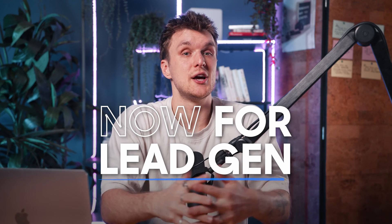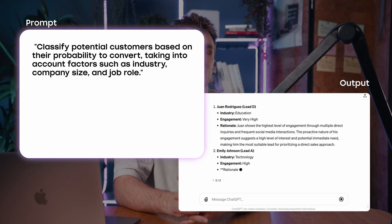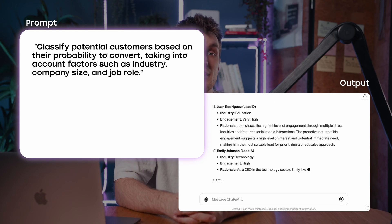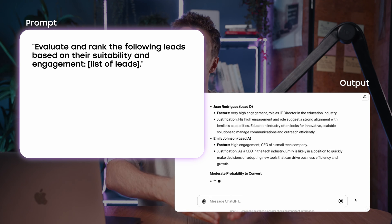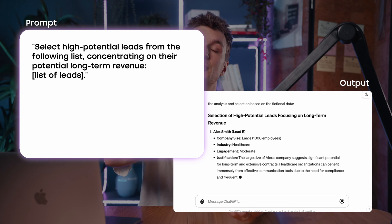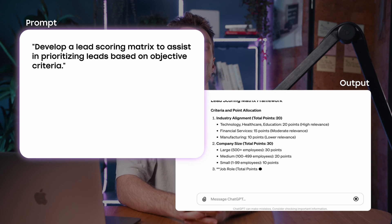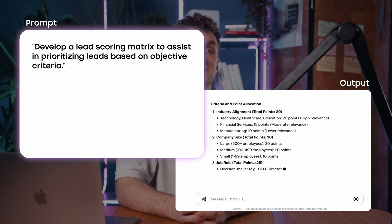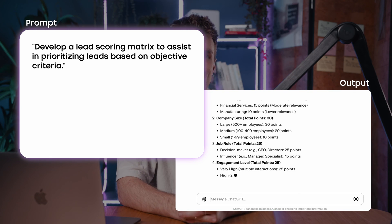For lead gen, you can use it to assess the quality of your leads based on a fit with your ICP. You can rank leads most likely to convert, identify which leads have the most value in a large list, and even create a lead scoring system so that you know who to reach out to first.